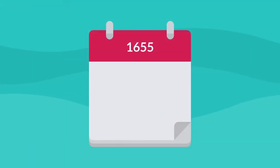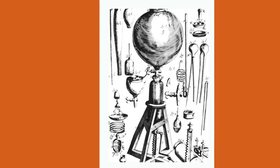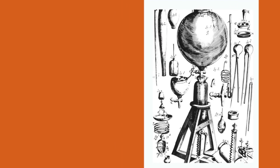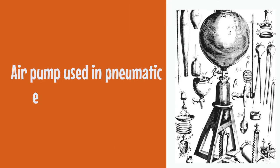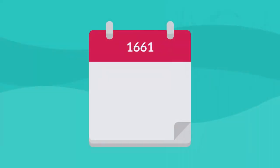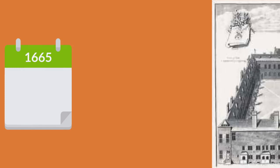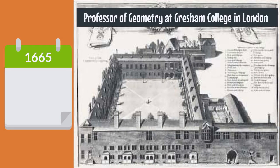In 1655, Hooke was employed as an assistant to renowned scientist Robert Boyle, playing a significant role in constructing the experimental apparatus for Boyle's studies, including the air pump used in pneumatic engine experiments. In 1661, Hooke became a member of the Royal Society, and in 1665, he assumed the position of Professor of Geometry at Gresham College in London.